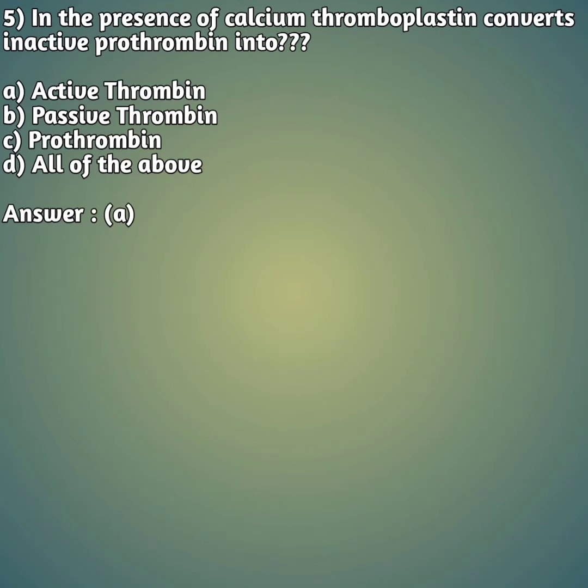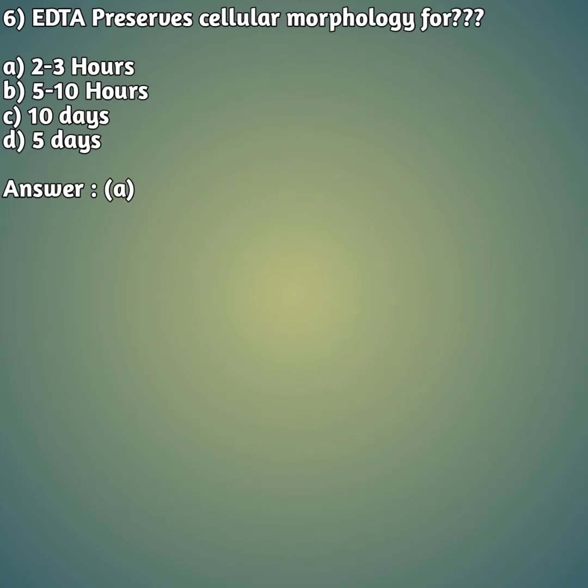Fifth question: in the presence of calcium, thromboplastin converts inactive prothrombin into — option A: active thrombin, option B: passive thrombin, option C: prothrombin, option D: all of the above. The right answer is option A, active thrombin.